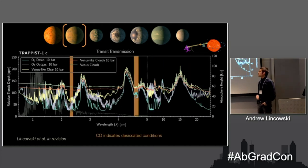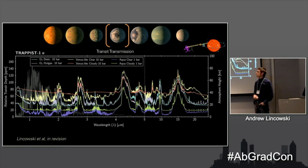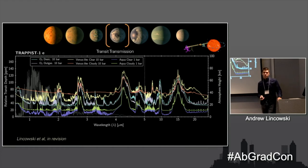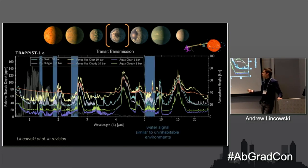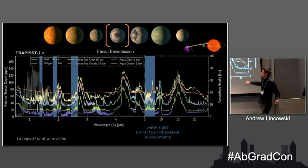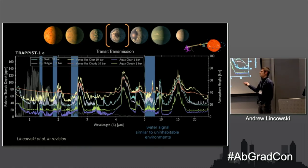TRAPPIST-1e is generally considered the best target for a potentially habitable planet. I've plotted the aqua planet as well — those two spectra at the bottom. Since they're 1-bar atmospheres, their transmission spectra probe deeper into the atmosphere, deep enough to see water features from the troposphere. Interestingly, the relative transit depth of the water features is roughly the same between the aqua planet and the runaway greenhouse planets, because the runaway greenhouse cases have a little less water in the atmosphere. So it's really hard to distinguish whether a planet has an ocean just from a water feature.